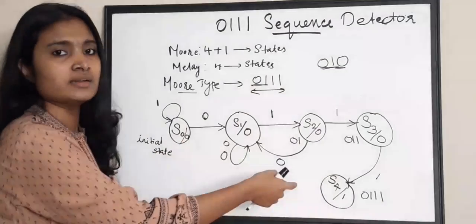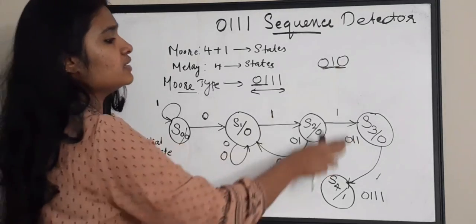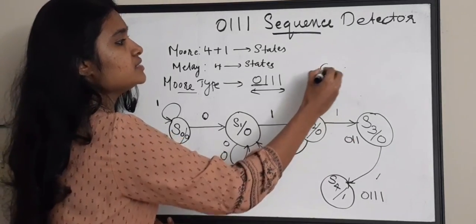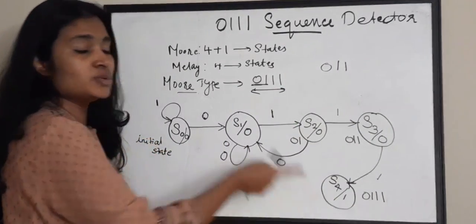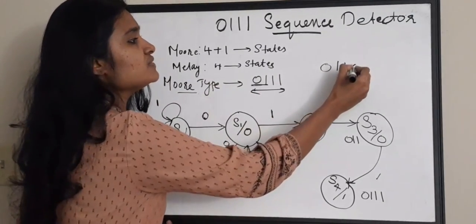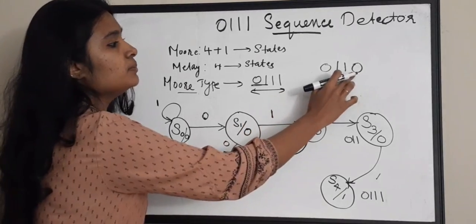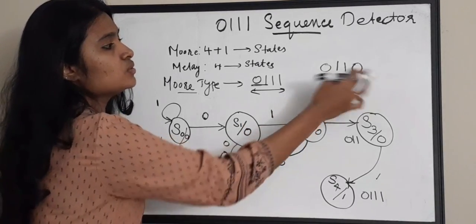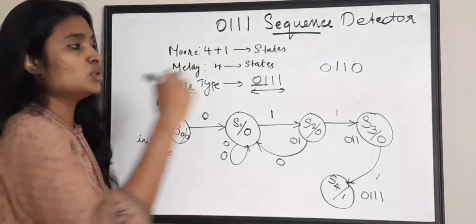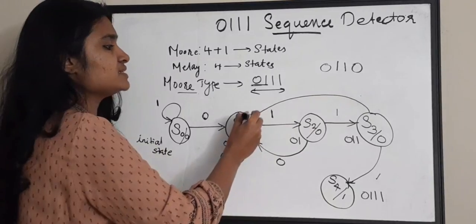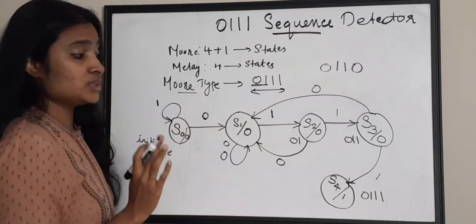Now the case of S3: you have 0 1 1 in your hand. If you receive a 1 you have completed your sequence, but what if you receive a 0? There is no 1 1 0 or 1 0 in your sequence. Your sequence is 0 1 1 1, so again you have to start from 0 and jump back to S1 state. All these cases are now completed.